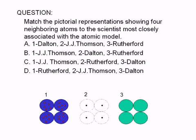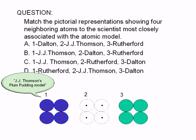Match the pictorial representations of four neighboring atoms to the scientists most closely associated with the atomic model. Model 1 resembles J.J. Thomson's plum pudding model, which was proposed following the discovery of electrons from cathode ray tube experiments. Thomson envisioned atoms as positively charged spheres with negatively charged electrons embedded throughout.